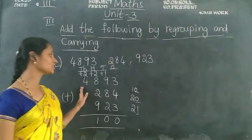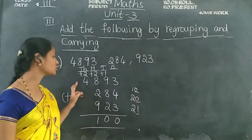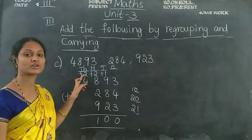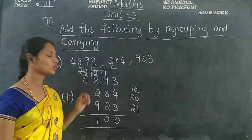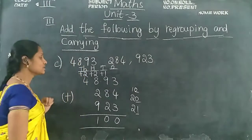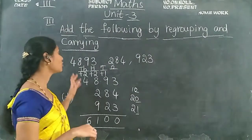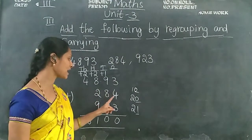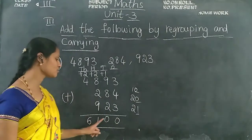In the thousands place of the given sum, there is only 4. So add the carried forward number: 4 plus 2 — keep 4 in your mind, take 2 fingers: 4 after 5, 6. Write 6 in the thousands place. So 4,893 plus 284 plus 923 equals 6,100.